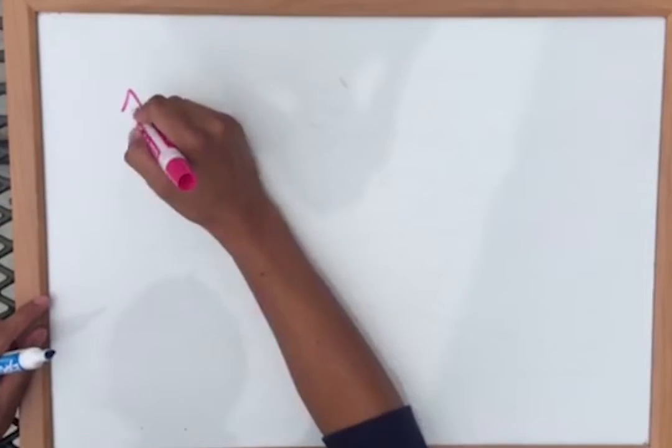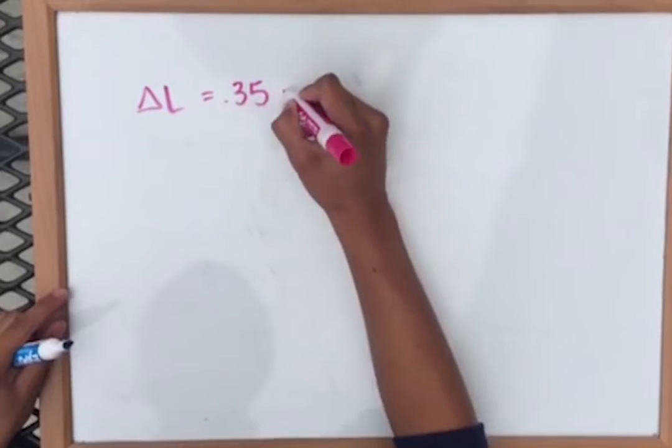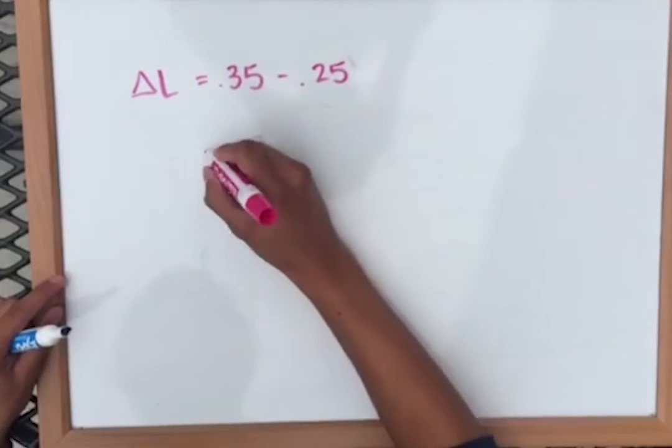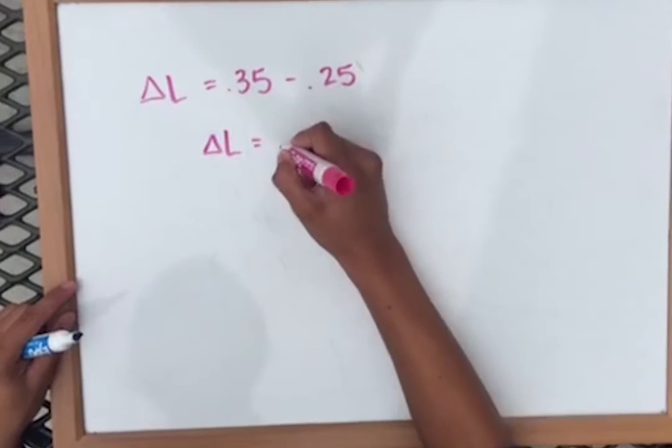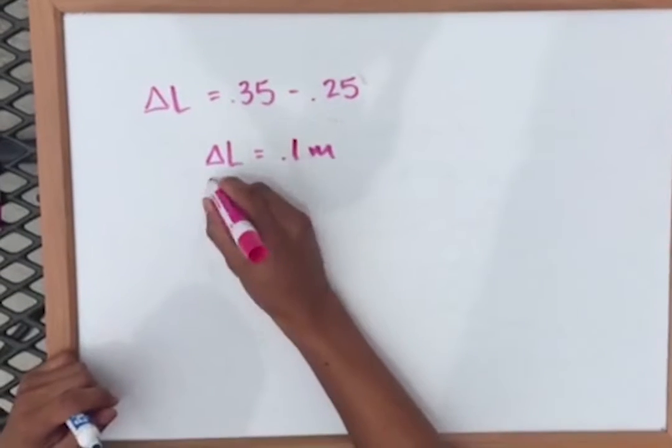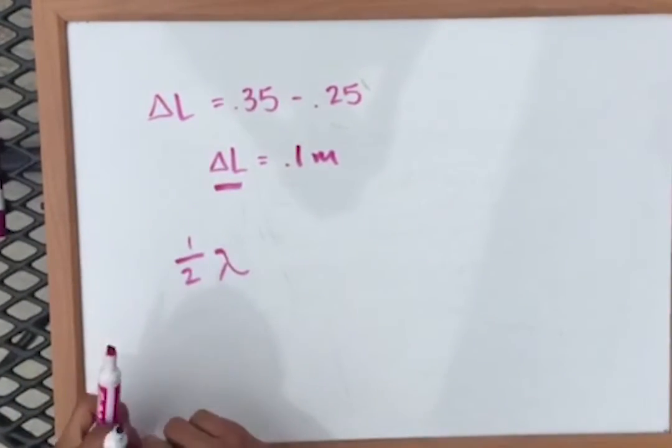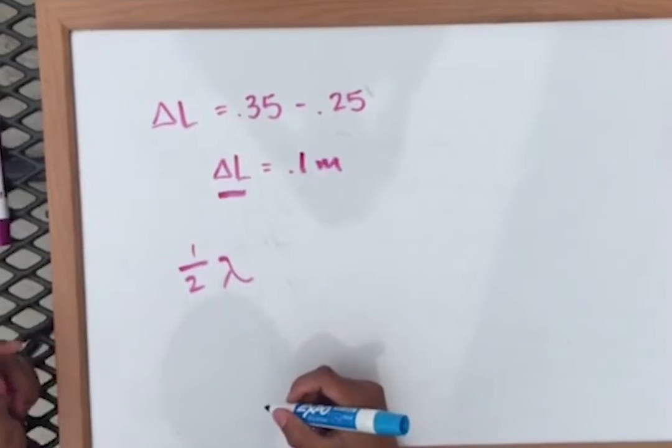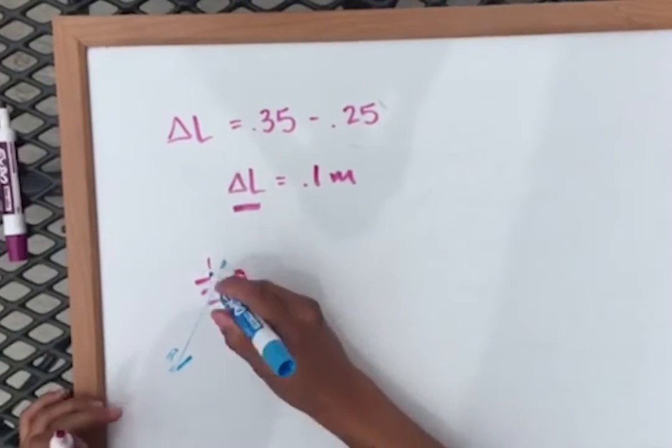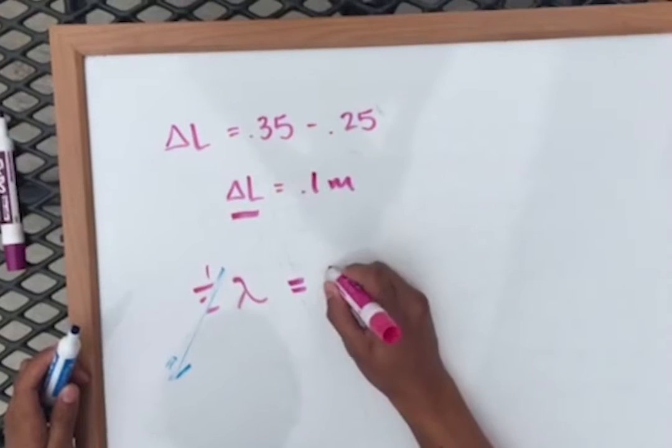The first thing we're going to have to do is find the change in L. The change in L is 0.35 meters minus 0.25 meters. The difference comes out to be 0.1 meter. The L is going to be defined as one-half lambda because as you move up each consecutive harmonic, the wavelength increases by one-half. So you're going to multiply one-half lambda by two to get lambda by itself. And so lambda equals 0.2 meters.